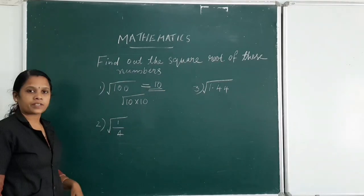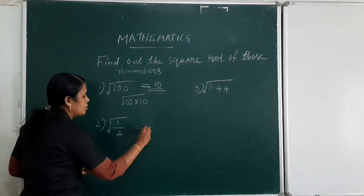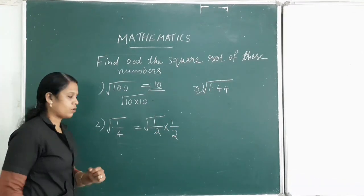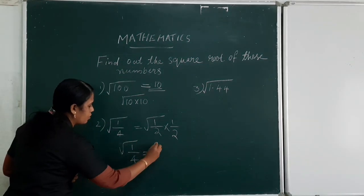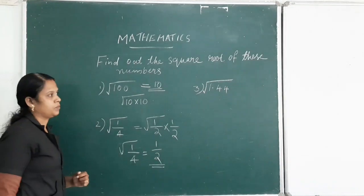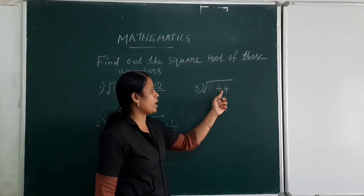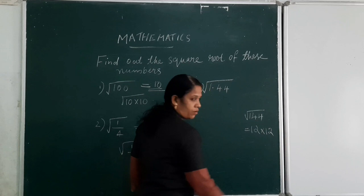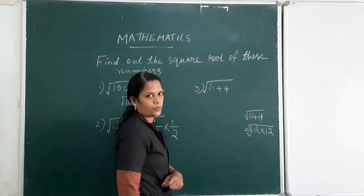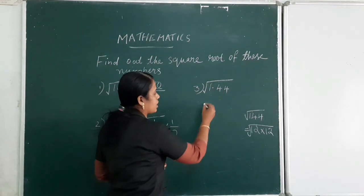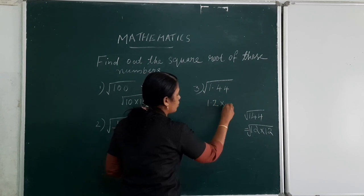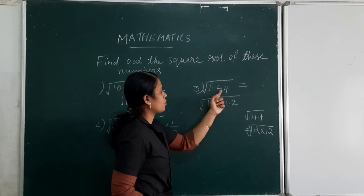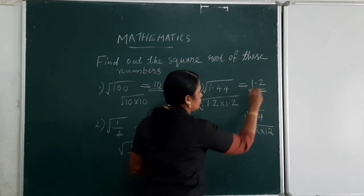Next one: the square root of 1/4. Since 1/4 = 1/2 × 1/2, the square root of 1/4 is equal to 1/2. Next: 1.44 equals 1.2 × 1.2, so the square root of 1.44 is equal to 1.2.